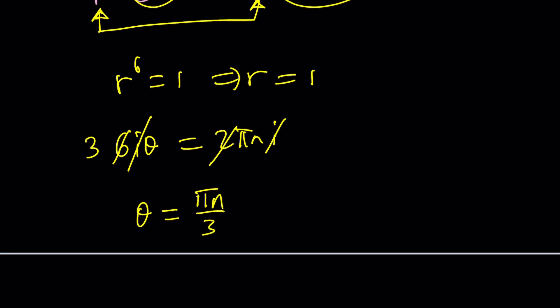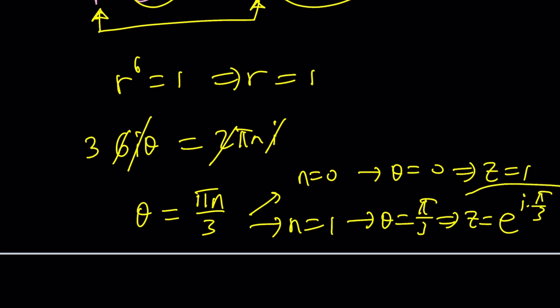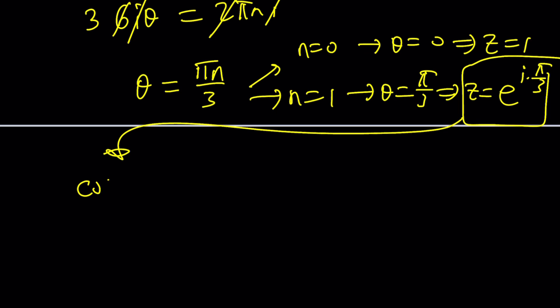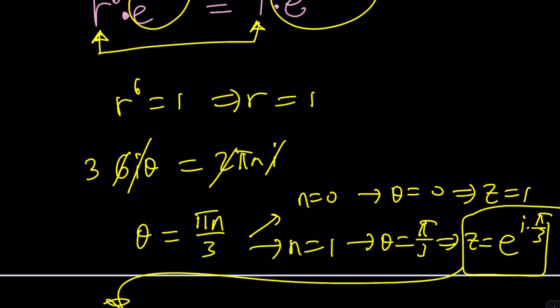If n is zero, theta is zero, and r is one, so z will be one. If n equals one, you get theta equals pi over three and z will be one times e to the power i times pi over three. If you use Euler's formula this will turn into cosine pi over three plus i times sine pi over three. Exponential, sine, cosine, i all together, it's amazing. Cosine pi over three is one half and this is root three over two multiplied by i. You can get the solutions for n equals two, n equals three, and so on.